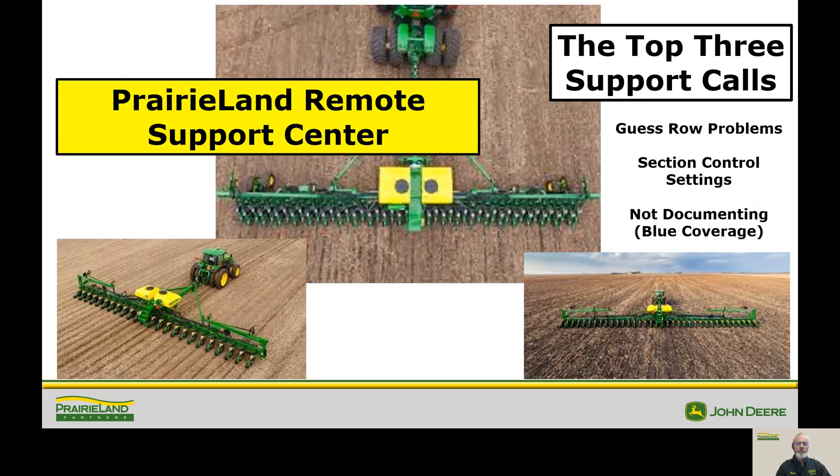There are three main areas that we deal with quite a bit. One is the guest row problems: how to make sure that the guest rows are correct when you go to plant and hopefully do it early. Along with that, section control settings: how to make the rows turn on and turn off correctly. And third, it's not documenting. Blue coverage is not showing up and because blue coverage isn't showing up, you're not sure if it's documenting. So we're going to try to address those three issues.